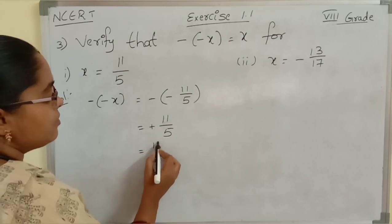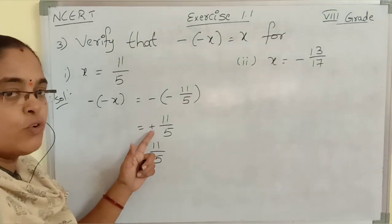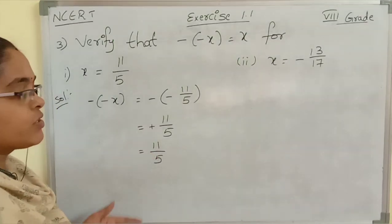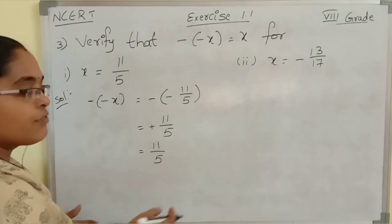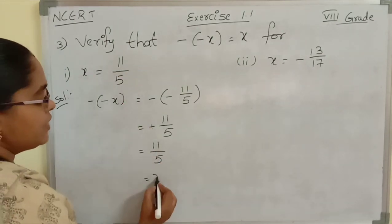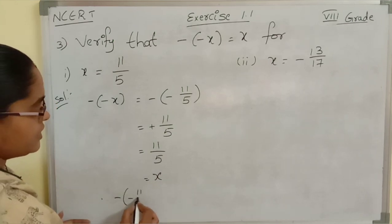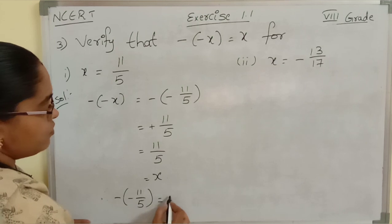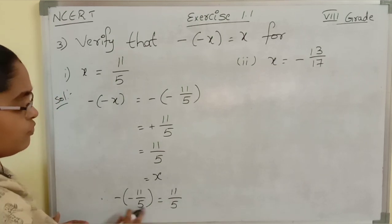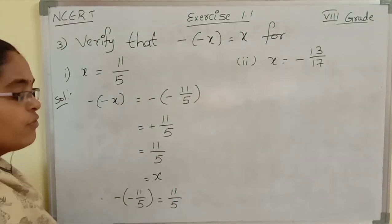Minus into minus gives plus 11 by 5, which is nothing but 11 by 5. If we have a positive sign before any number, we can ignore the sign. So plus 11 by 5 and 11 by 5 are the same, and 11 by 5 is nothing but x. Therefore, minus of minus 11 by 5 equals 11 by 5, which means minus of minus x equals x. Hence verified.